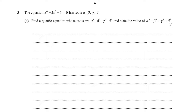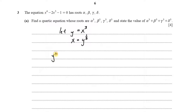To find the quartic equation with roots alpha cubed, beta cubed, gamma cubed, and delta cubed, we let y equal x cubed. Making x the subject gives x equals y to the power of one third. We substitute y to the power of one third in place of x into the original equation to get a new equation with these roots.